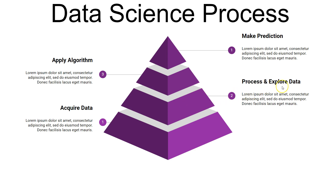The next step is to process and explore data. There's a bit of overlap between the data engineer and data scientist, because sometimes acquiring data becomes a quite regular process. The data engineer can then help with processing and exploring data — for example, setting up standard processes like finding outliers or cleaning the data.